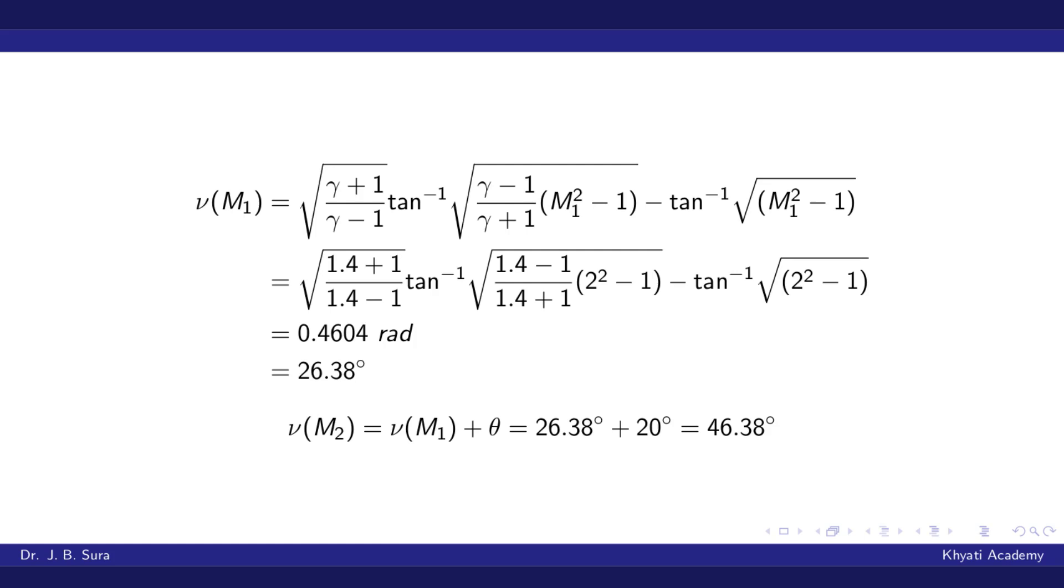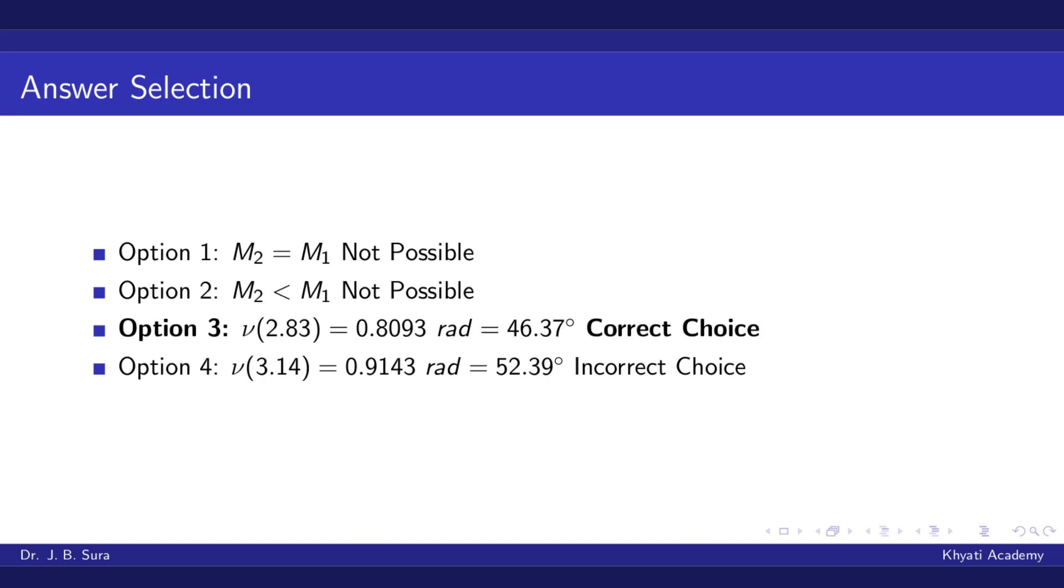So the Prandtl-Meyer function for M₂ will be equal to ν(M₁) plus θ, so 26.38 plus 20 equals 46.38 degrees. Now we cannot find out M₂ directly from the given equation unless we use trial and error method, but we are given four options.